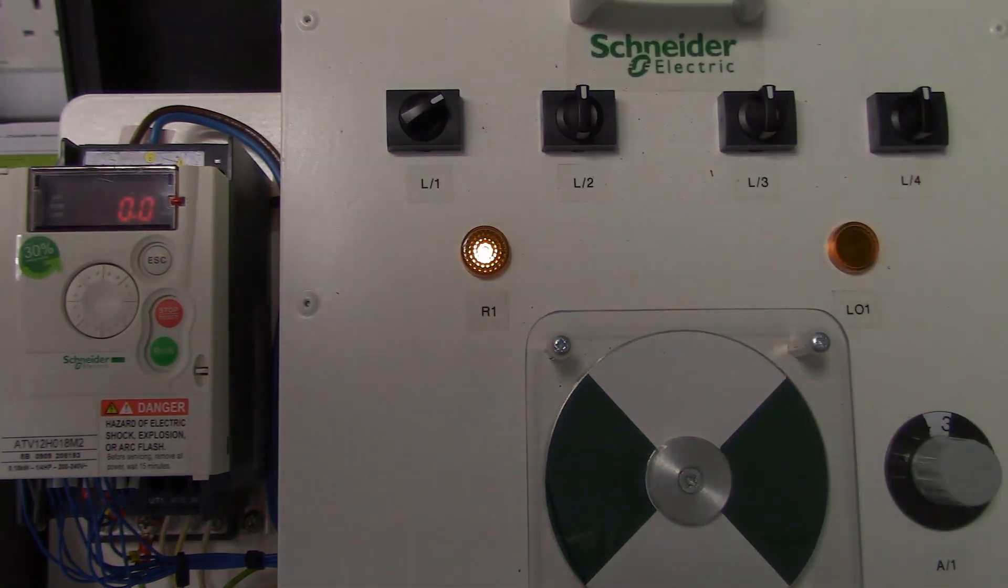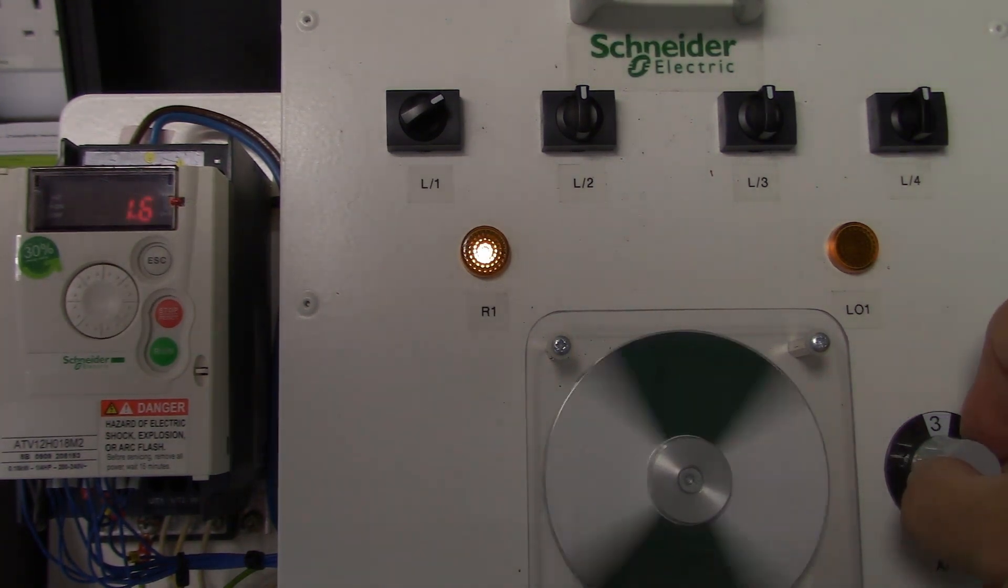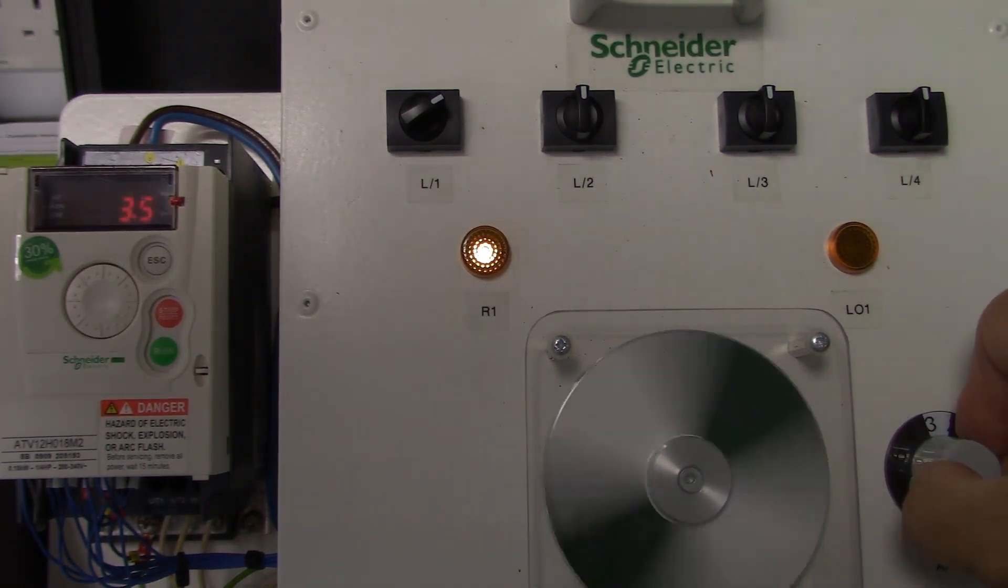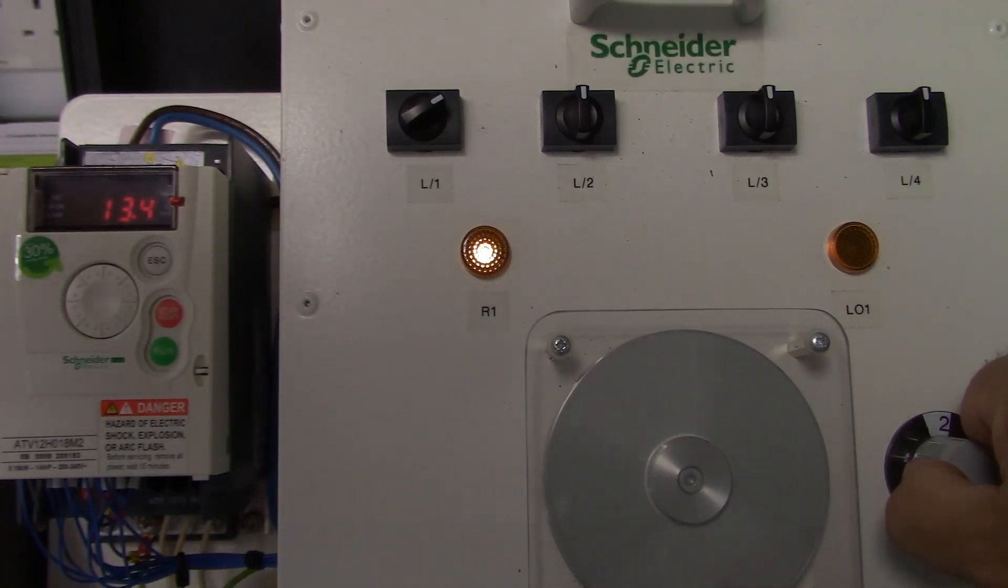We can now start the drive using logic input 1. We now go to a running state. By reducing the feedback the drive will speed up. And if we raise the feedback the drive will now slow down.